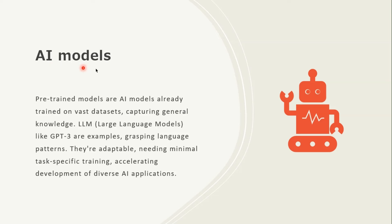The next thing you want to know is what an AI model is. An AI model, or pre-trained model, is trained on a vast dataset and takes knowledge from it. It's the same as a large language model. A pre-trained model is called a large language model, and large language models include GPT-3, GPT-4, or any model you can think of right now.